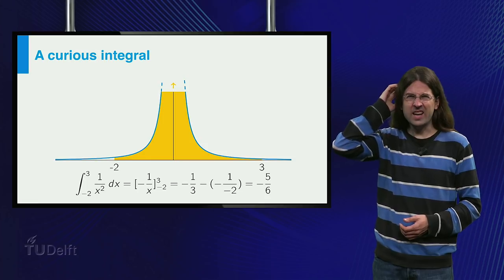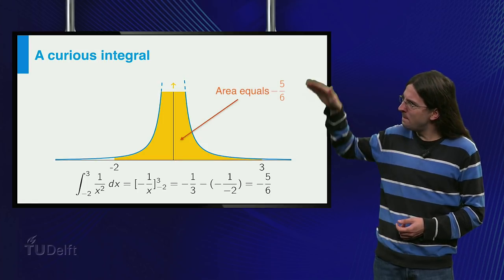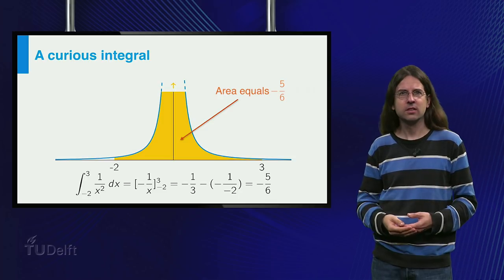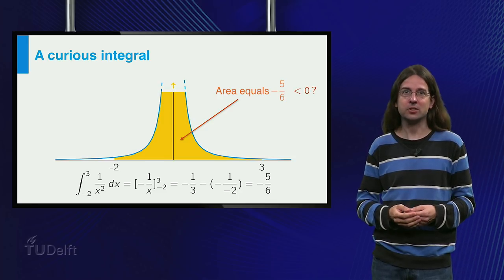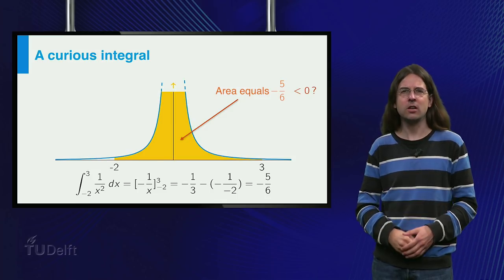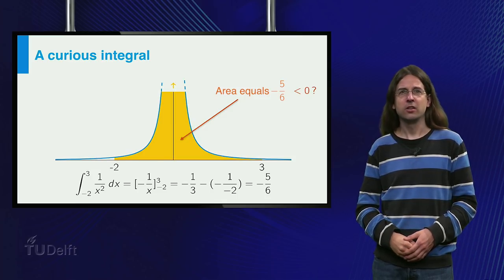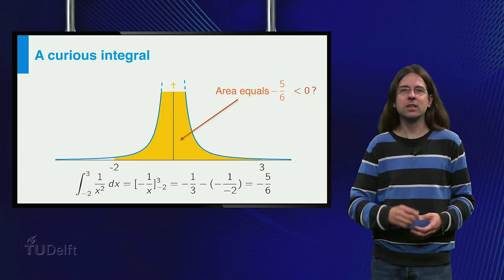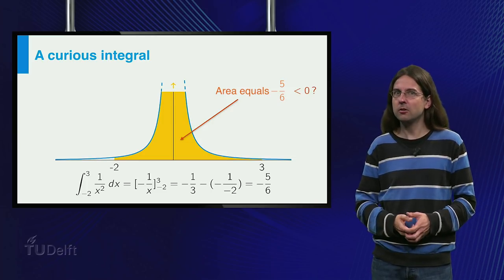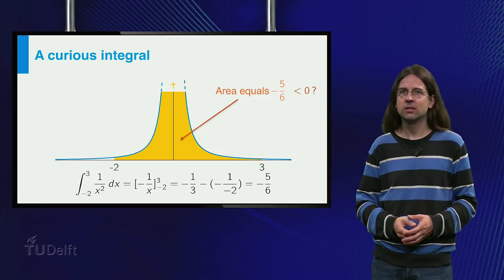Wait, the area is clearly above the x-axis, and that's positive. So the value can't equal minus 5 over 6. Something must be off. You might think I just missed a minus sign somewhere, but if you check the calculation carefully you will find that there are no errors there. So what's up?